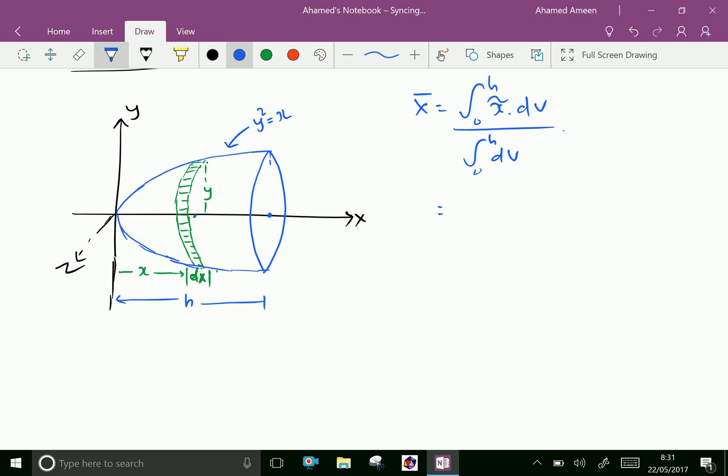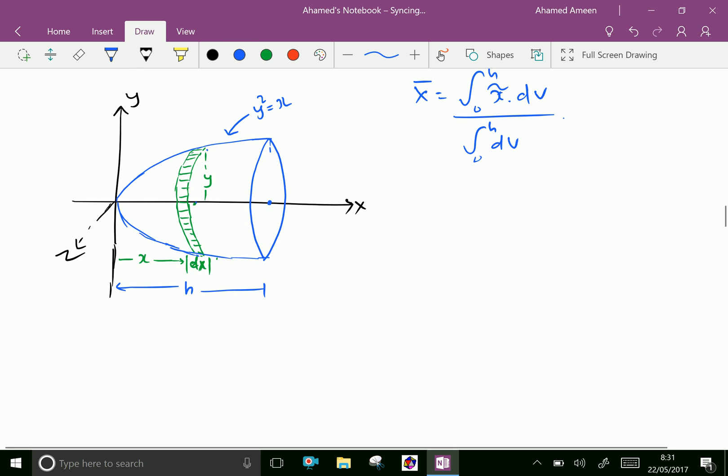Now take a small strip of circular shape having dx as its thickness and y as its radius. The volume of this strip is V = πy²dx.